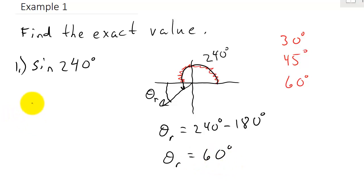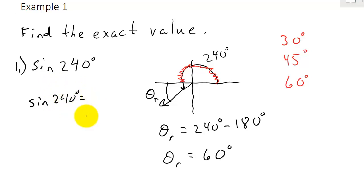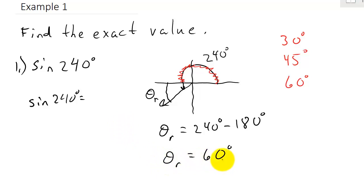So, sine of 240 degrees is equal to — well, what is the sine of 60 degrees? The sine of 60 degrees is something you're supposed to memorize, along with the sine, cosine, and tangent of 30, 45, and 60 degrees, as well as 90, 180, 270, 360, and 0 degrees. Believe me, if you remember those, it will make your life a lot easier in trig. The sine of 60 degrees is the square root of 3 over 2.